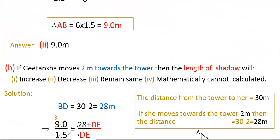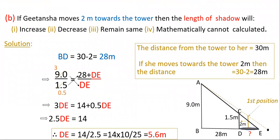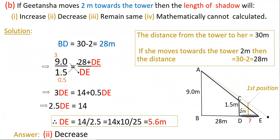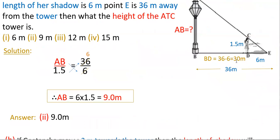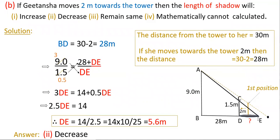For the second question: if Geetan Shah moves 2 meters towards the tower, what will be the length of the shadow? Four options are given — increase, decrease, remains same, or mathematically cannot calculate. She moves 2 meters towards the tower from her starting position. Previously BD was 30 meters, so now BD equals 30 minus 2, that is 28 meters.